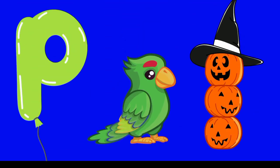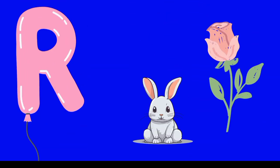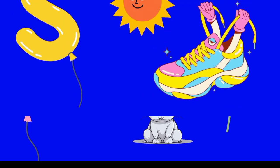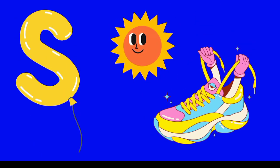P is for parrot and P is for pumpkin. Q is for quail and Q is for queen. R is for rabbit and R is for rose. S is for sun and S is for shoes.